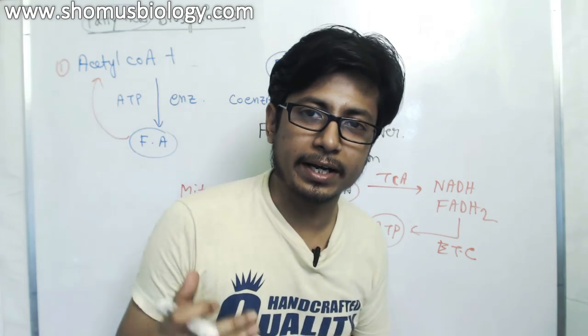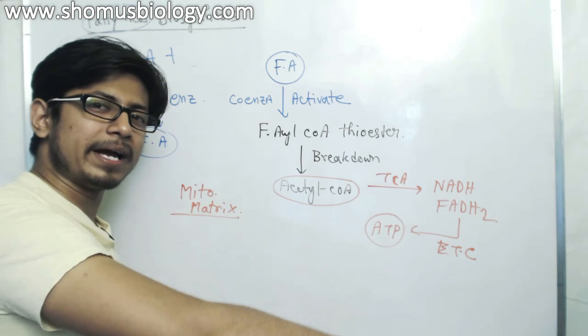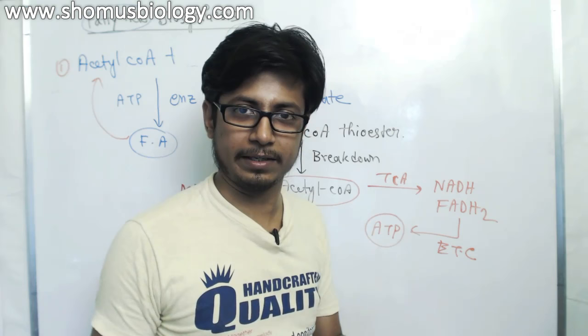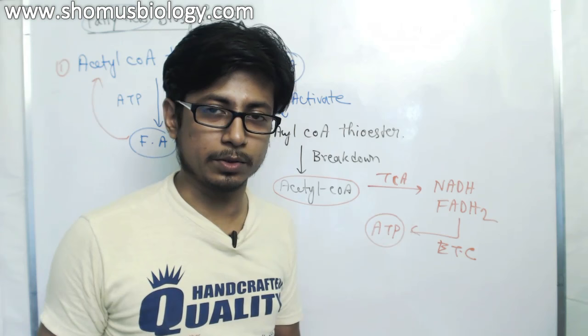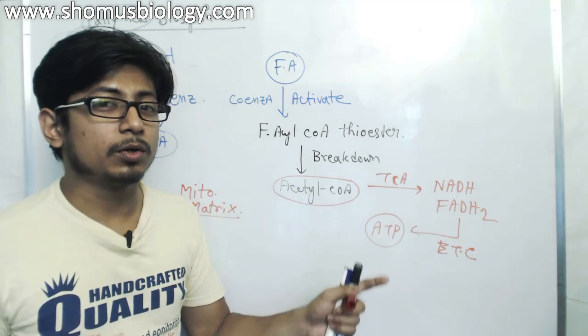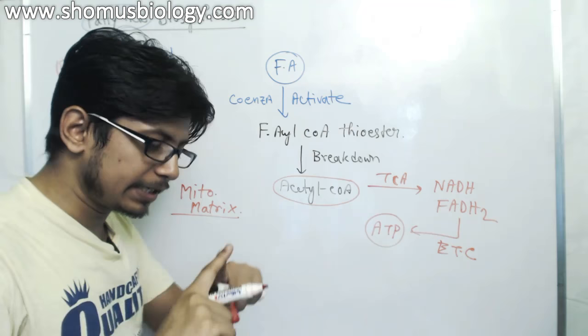We know acetyl-CoA cannot be readily transported across the mitochondrial membrane. So it's a better idea that acetyl-CoA should be produced in the mitochondrial matrix itself. By this fashion, we can avoid the transport of acetyl-CoA if any. So here it goes, the process inside the mitochondrial matrix for most cases, like for short fatty acids or moderate length fatty acid molecules.